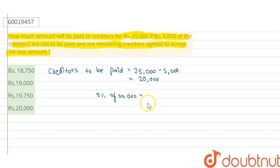5% of 20,000 we will have. 200 into 5 is equal to 1,000.